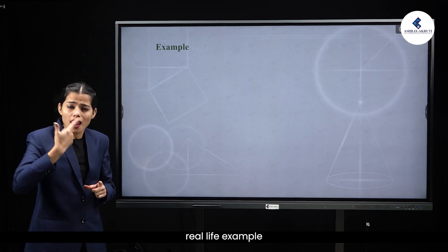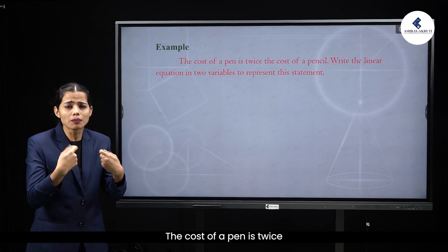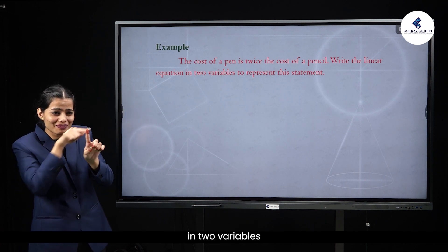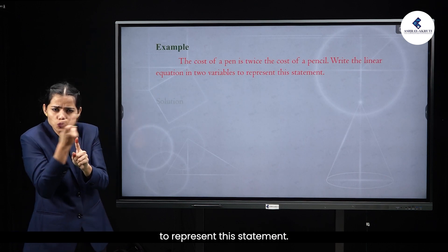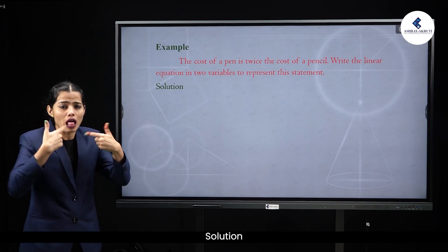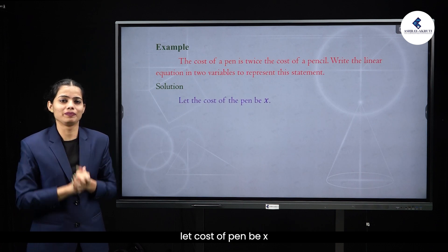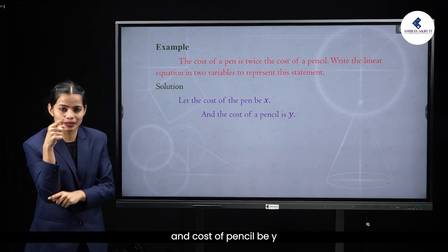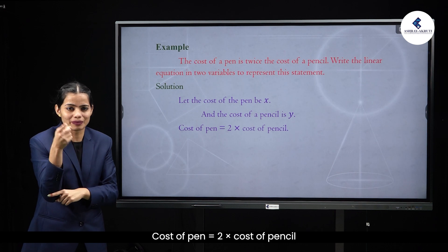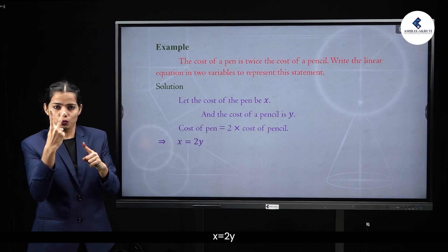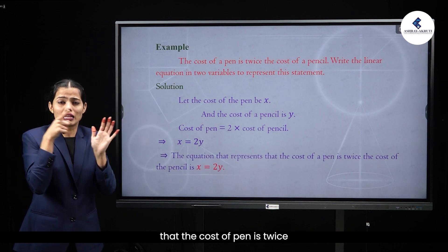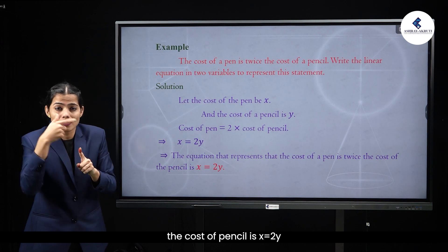Let us see a real life example. The cost of a pen is twice the cost of a pencil. Write the linear equation in two variables to represent this statement. Solution: Let the cost of pen be x and the cost of pencil be y. Cost of pen = 2 × cost of pencil, so x = 2y. The equation representing this is x = 2y.